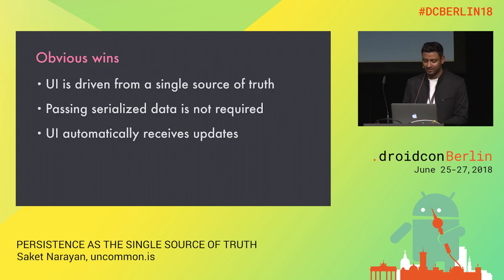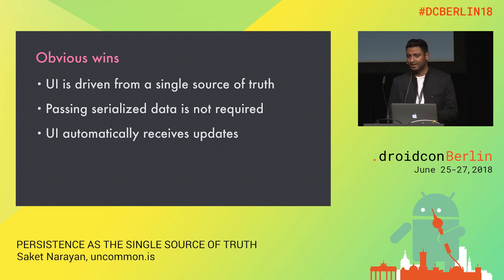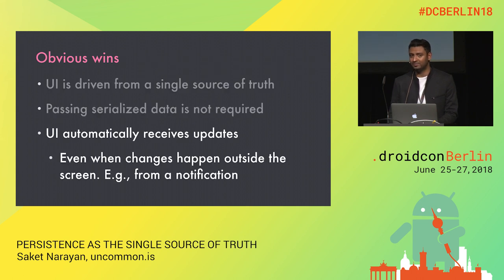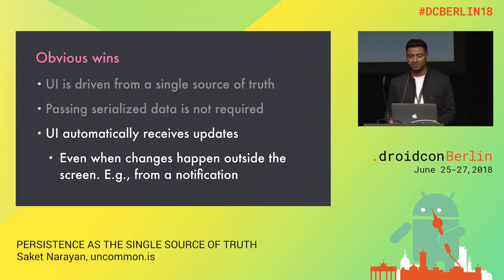There are multiple obvious advantages here. The first is that there's only one source of information, so debugging the UI state becomes very trivial — you can just put a breakpoint or a log in one place and not five different places. The second advantage is that passing data around by serialising it is no longer required. The third advantage is that the UI automatically receives updates, and this works even when changes are happening outside the screen — for example, if there's a notification with the same submission and a vote button, if the user clicks it, the screen will also get updated automatically.